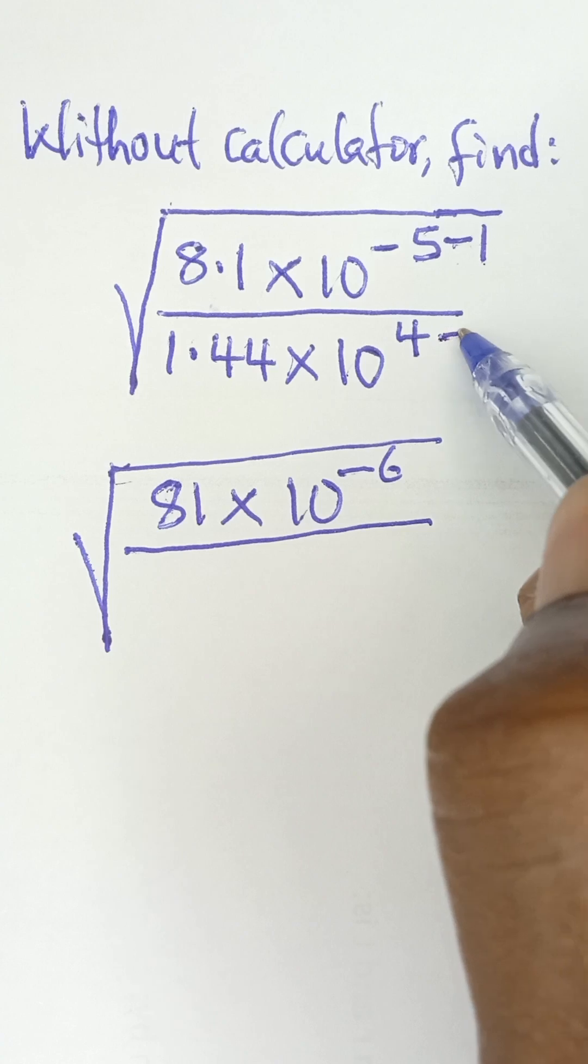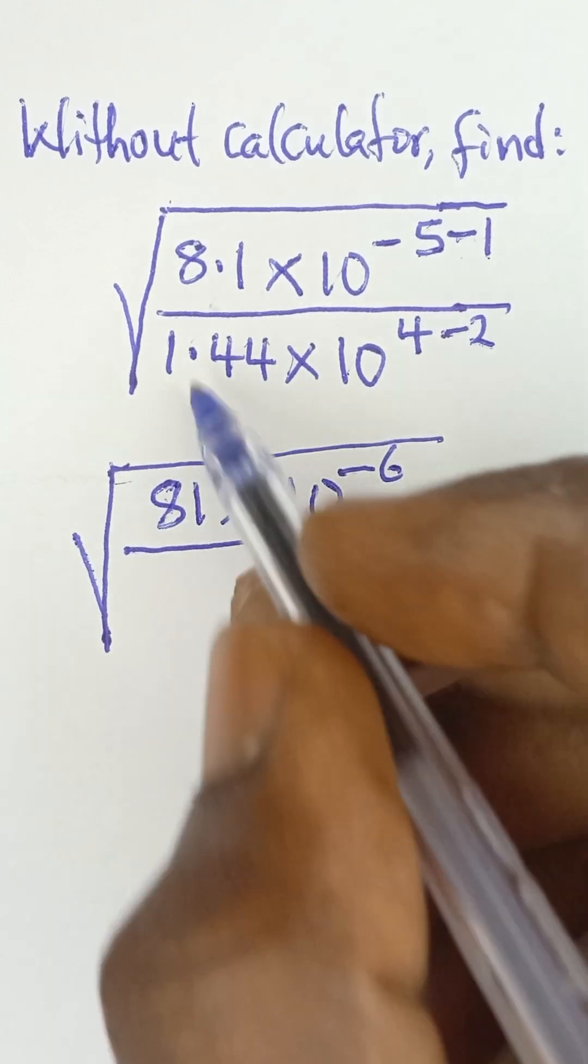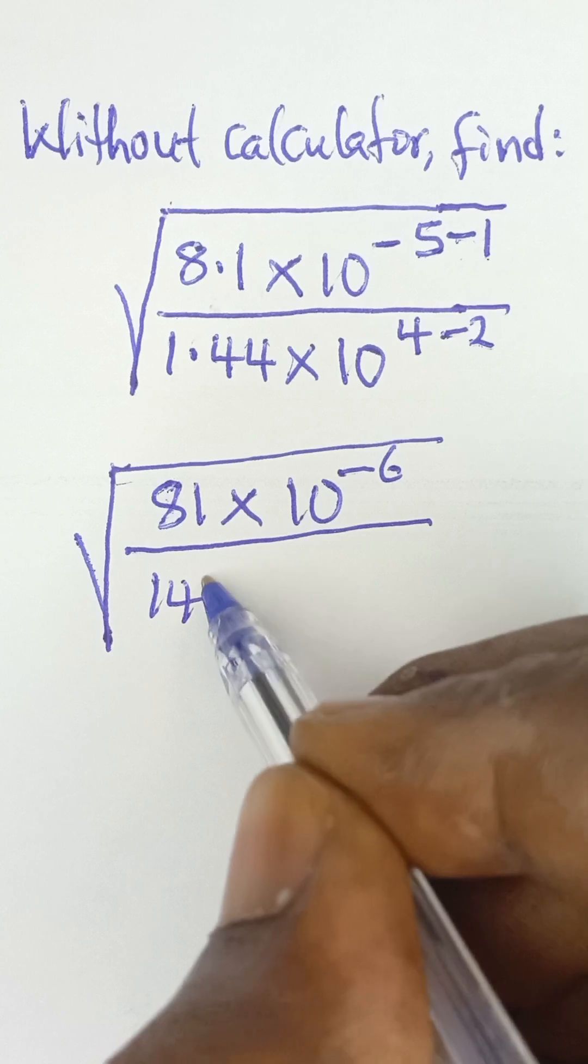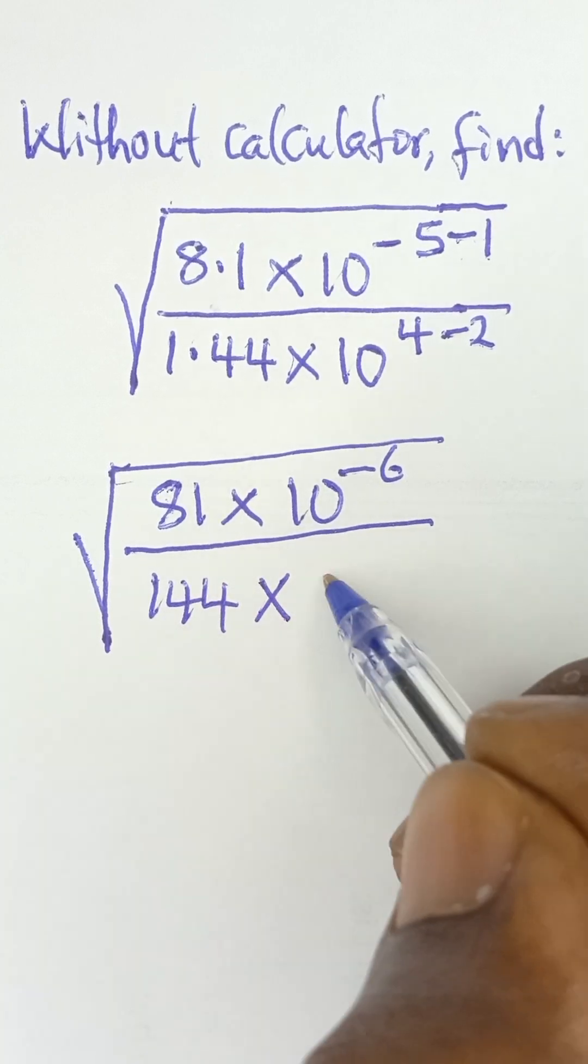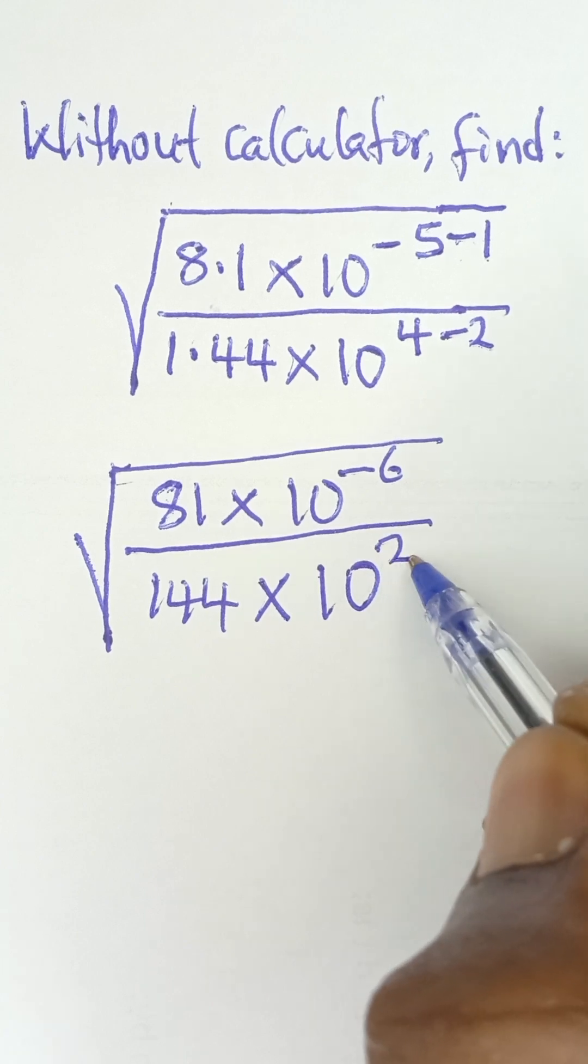So when I do that, I also subtract 2, because I've moved it twice. So I subtract 2 from this power. So this becomes 144 and then multiply by 10 raised to the power 4 minus 2 is 2.